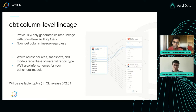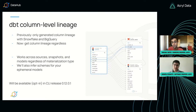Now the update is: you can. This will work across all of your sources, your snapshots, your models. It doesn't matter if they are incremental or ephemeral models — whatever setup you've got, we'll be able to generate column-level lineage based on that.